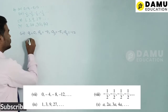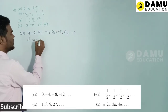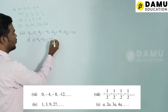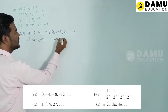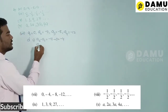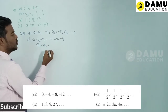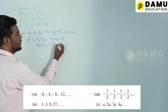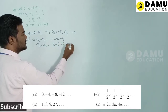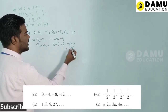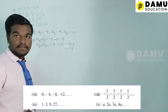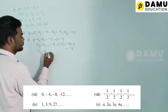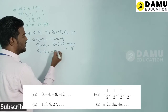The common difference d = a2 − a1 = −4 − 0 = −4. Then a3 − a2 = −8 − (−4) = −8 + 4 = −4. And a4 − a3 = −12 − (−8) = −12 + 8 = −4.